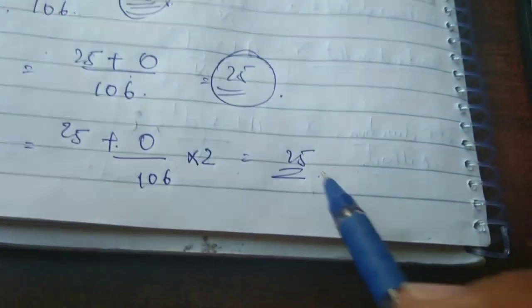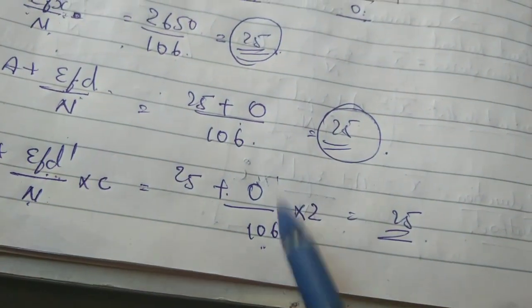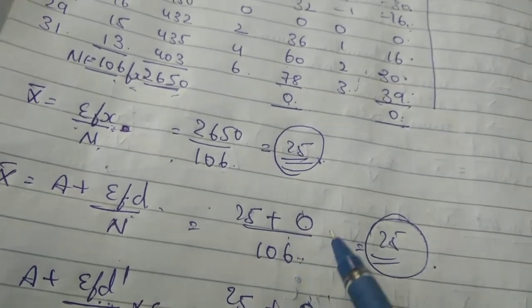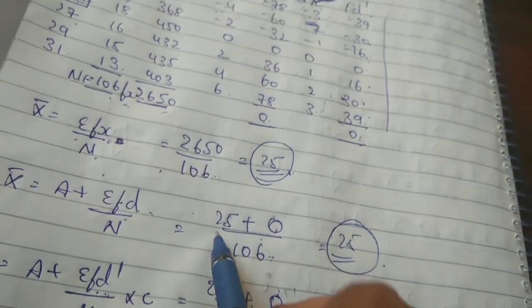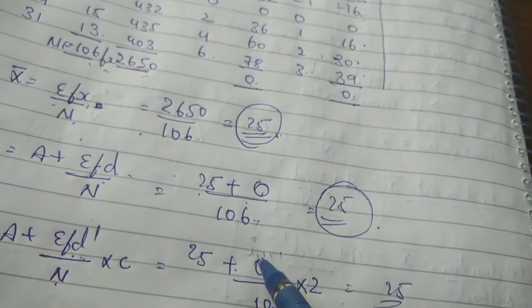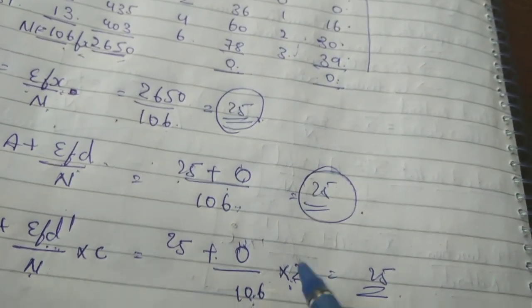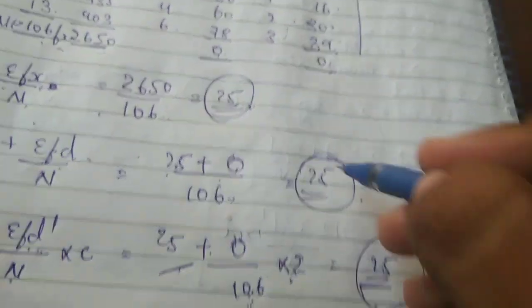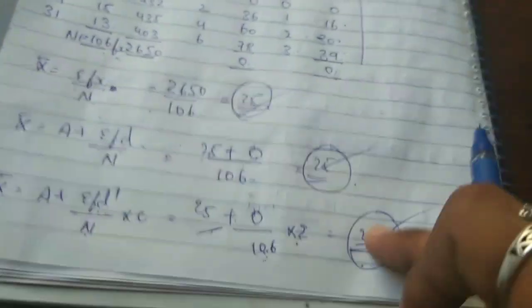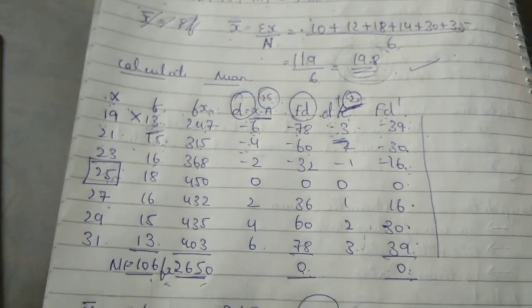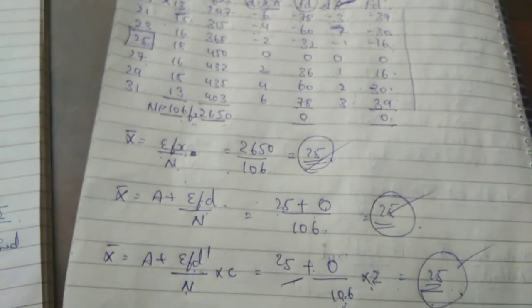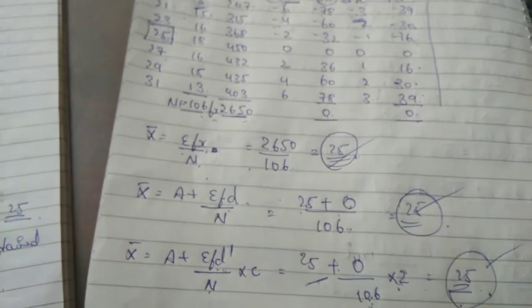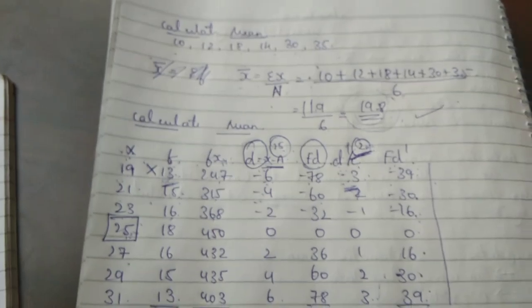So all three methods — direct, shortcut, and step deviation — give the same answer of 25. You do the inner calculation first, then multiply by c, then add A to get the final answer. Next we will do mean, median, and mode as well.